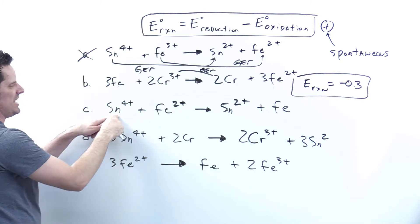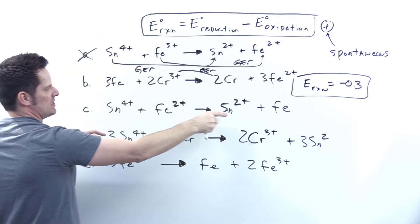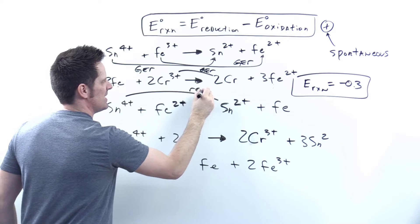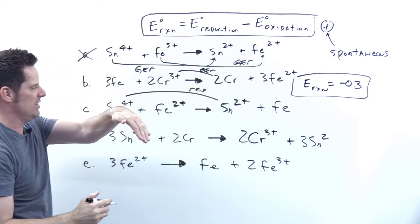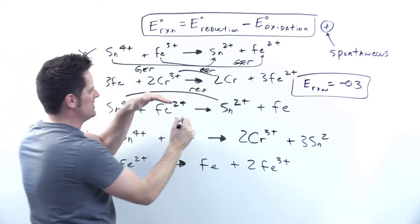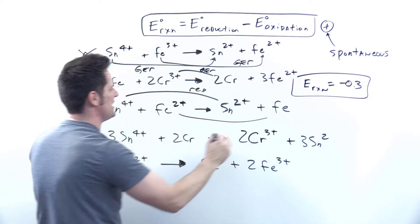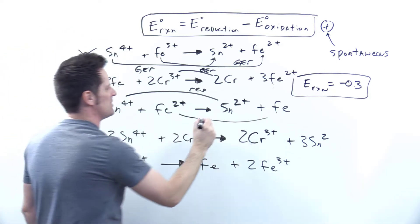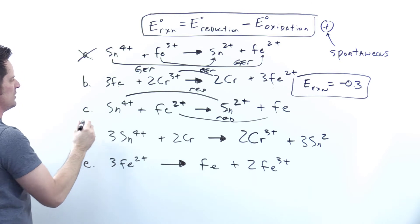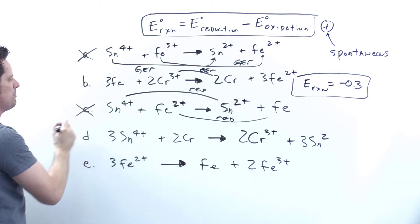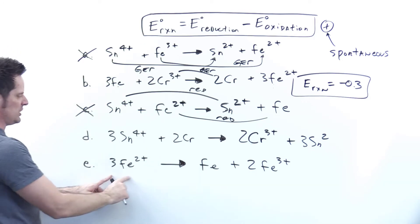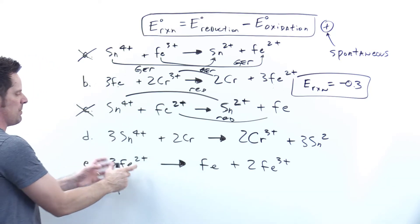In reaction C, tin goes from plus 4 down to plus 2 — that's a reduction. Iron goes from plus 2 down to 0 — that's also a reduction. Two reductions again, so reaction C is impossible and we cross it off.